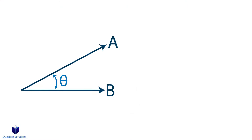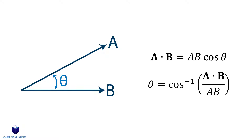So if we have two vectors with an angle, we can write the dot product like this. If you're trying to find the angle, we can write the equation like this to calculate the angle between the two sides.